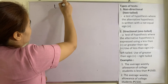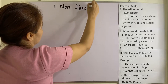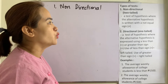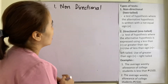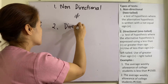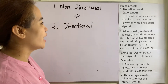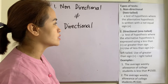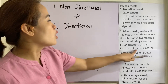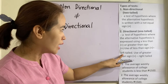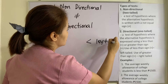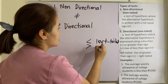The first type is non-directional, also called two-tailed. This is a test of hypothesis where the alternative hypothesis is written with a not-equal-to sign. The second type is what we call directional hypothesis, or one-tailed. It is a test of hypothesis where the alternative hypothesis is expressed using less than or greater than. Use of the less than sign means it is left-tailed, and use of the greater than sign means it is right-tailed.